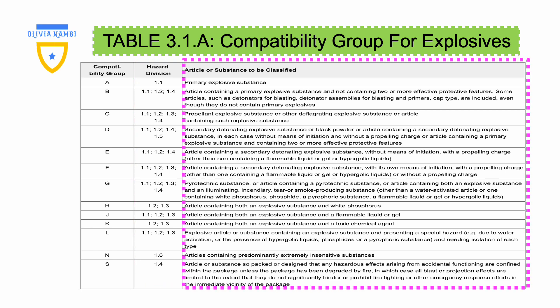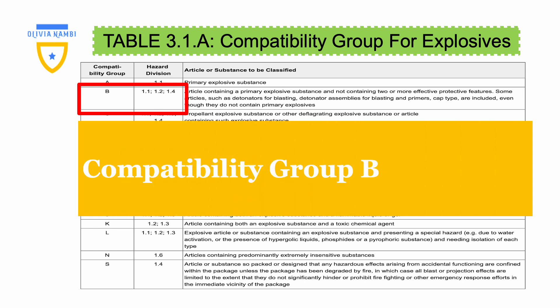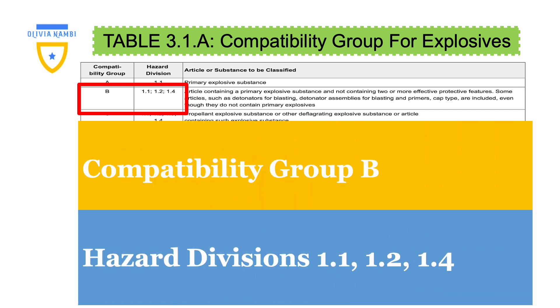The third column gives us the definitions for the respective compatibility groups. In compatibility group B, we have hazard divisions 1.1, 1.2, and 1.4.